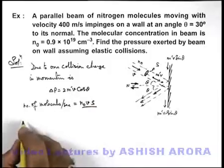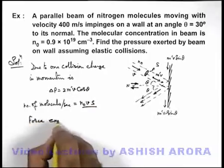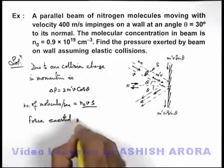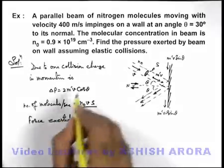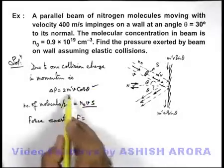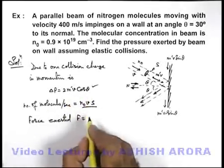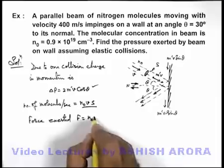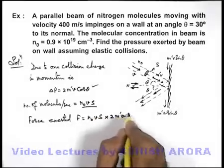And if we just calculate the total force exerted by the beam on the wall, then force exerted is basically total rate of change of momentum. So due to one collision the momentum is changed by this amount, so this much number of molecules are striking per second. So total change in momentum will be n₀vS multiplied by 2m'v cos θ.